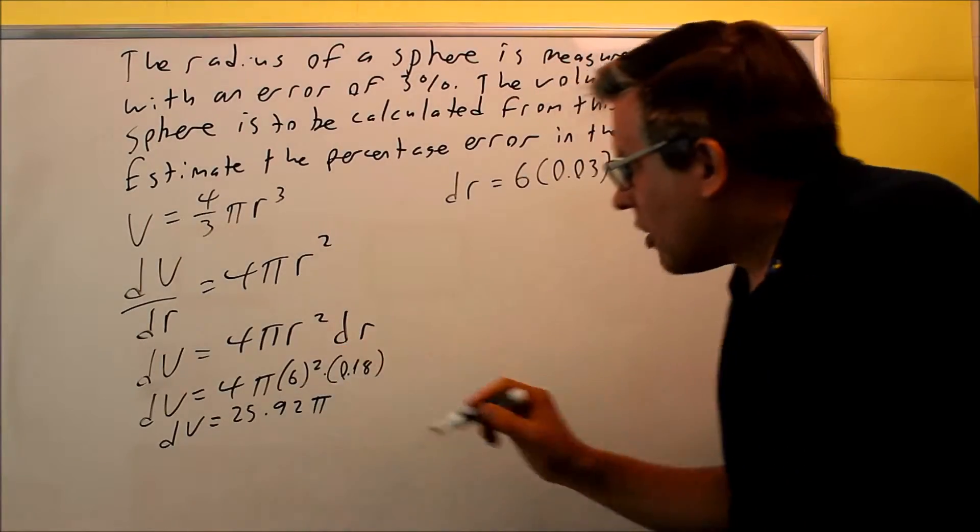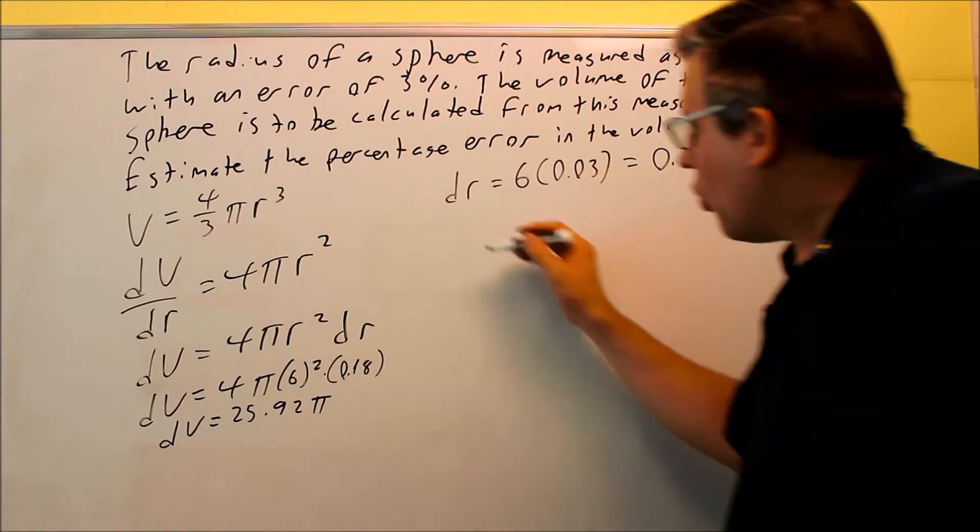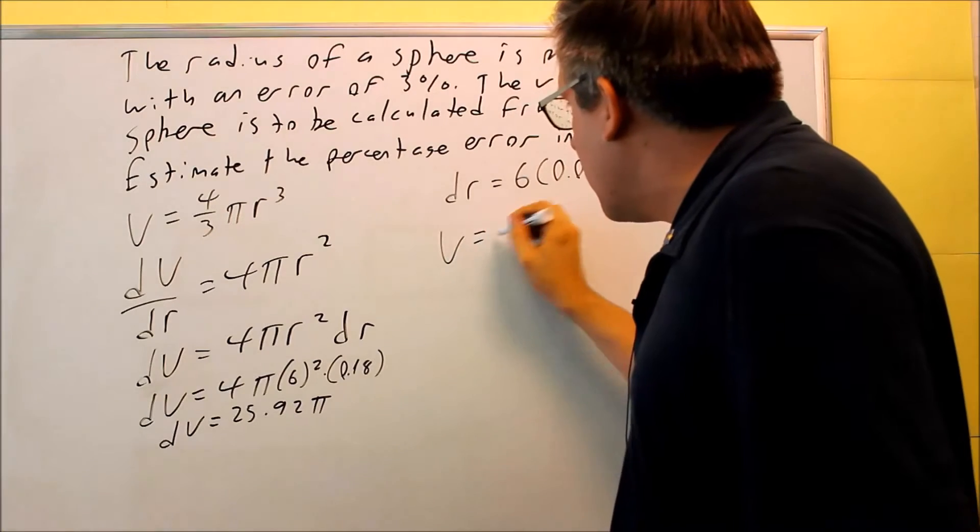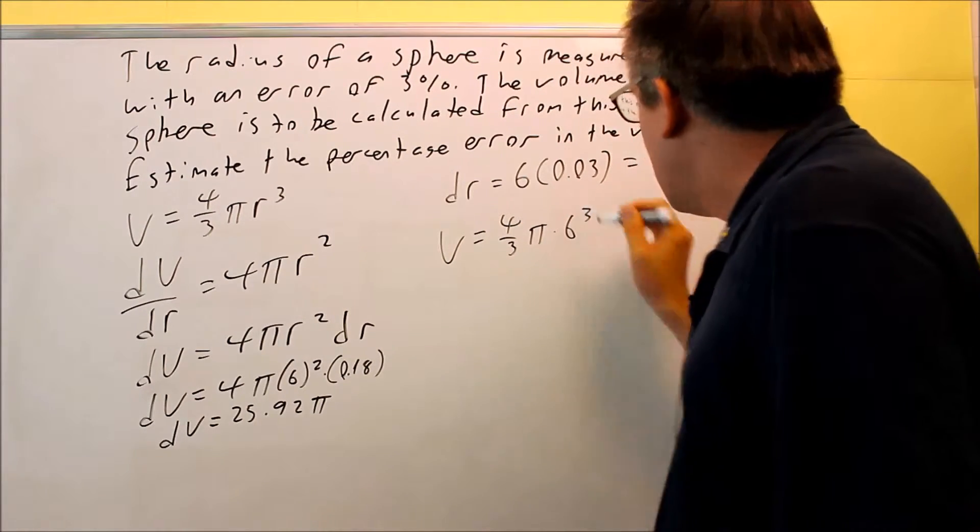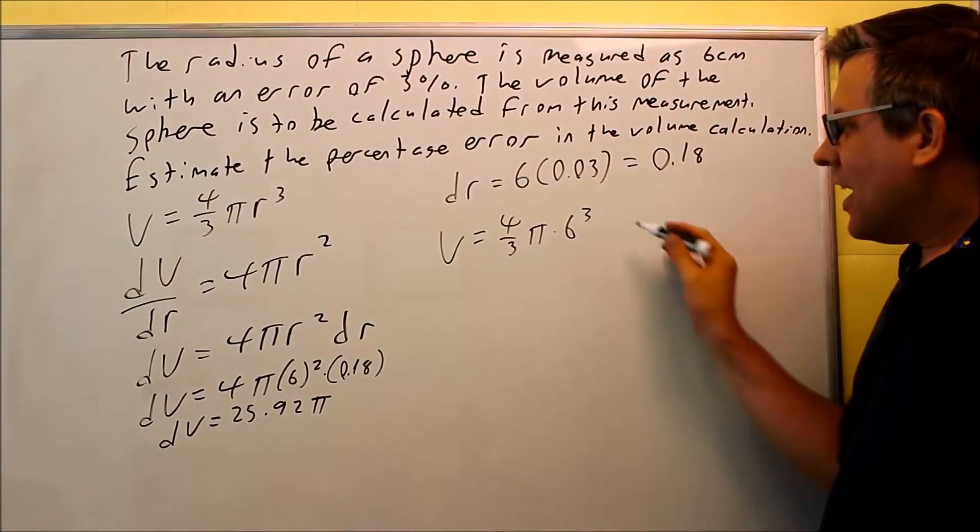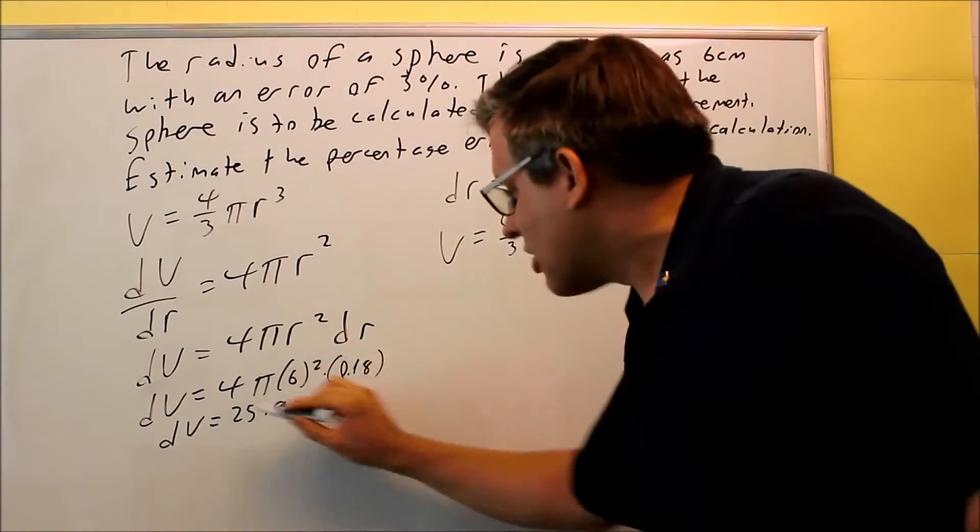Now, if you want to find out how this compares to the volume of the regular sphere, we're going to go back and use the original formula, 4/3 π, and I'm going to put in 6 for the radius. That will give me what my regular volume is supposed to be.